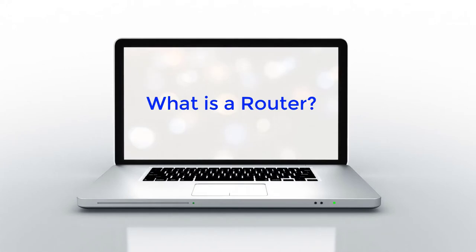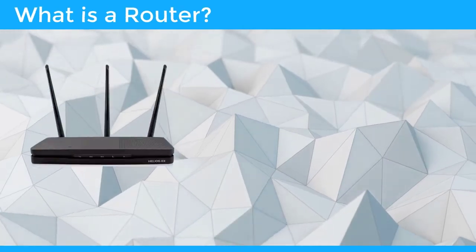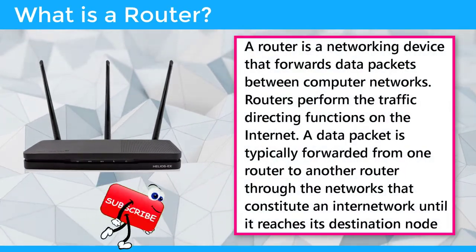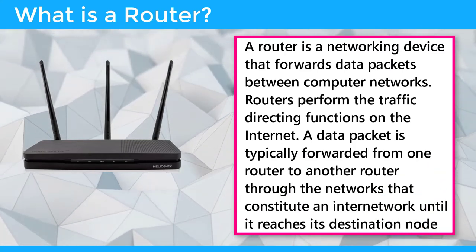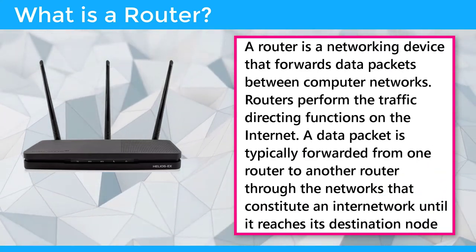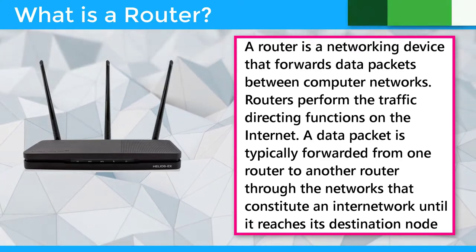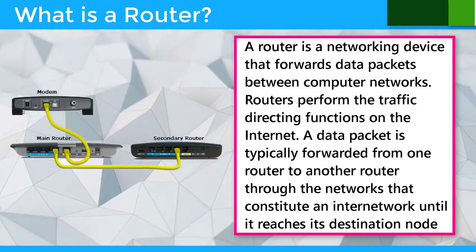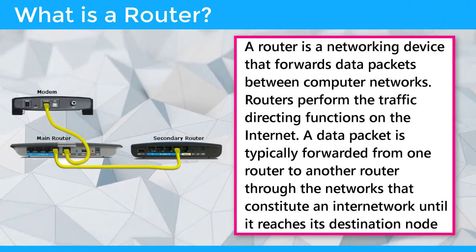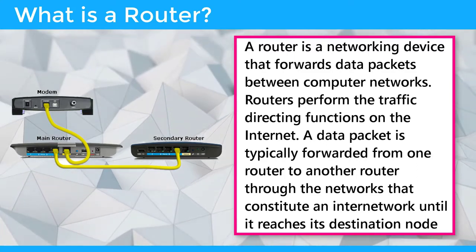A router is a networking device that forwards data packets between computer networks. Routers perform the traffic directing functions on the internet. A data packet is typically forwarded from one router to another router through the networks that constitute an internetwork, until it reaches its destination node.